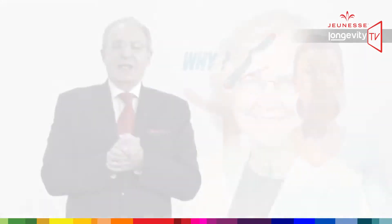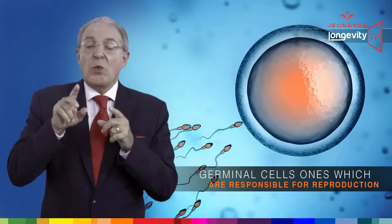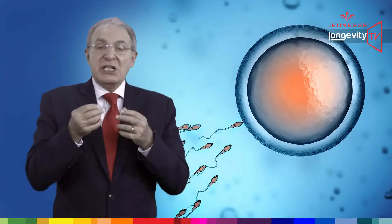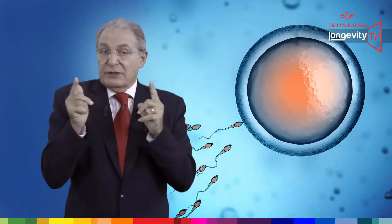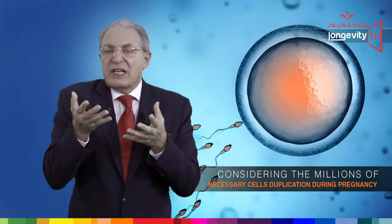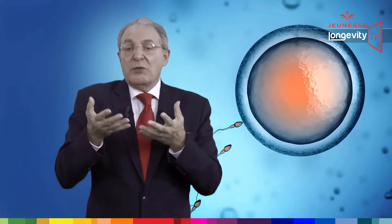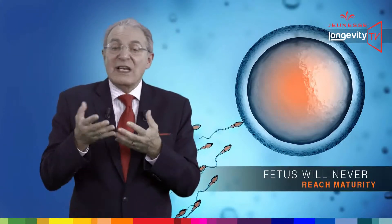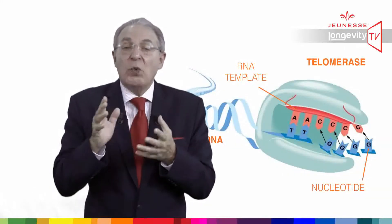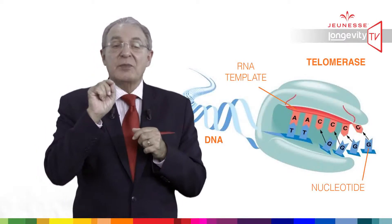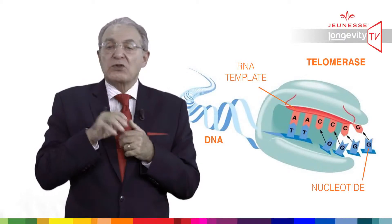Why do telomeres shorten in humans while in some other species they remain at full length? Elizabeth Blackburn from the University of California, Berkeley discovered why — and with this discovery she won the Nobel Prize in 2009. While working on germinal cells, those responsible for reproduction, she found that their telomeres never shorten. This is almost a miracle of nature, because if an embryo inherited short telomeres from its parents, considering the millions of necessary cell duplications during pregnancy, all the cells would reach senescence in a few days and the fetus would never reach maturity.